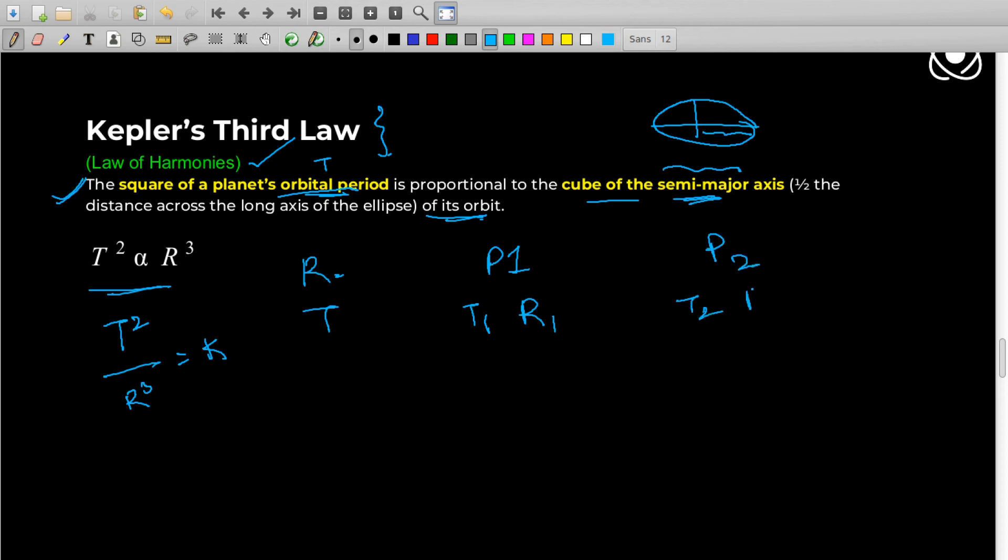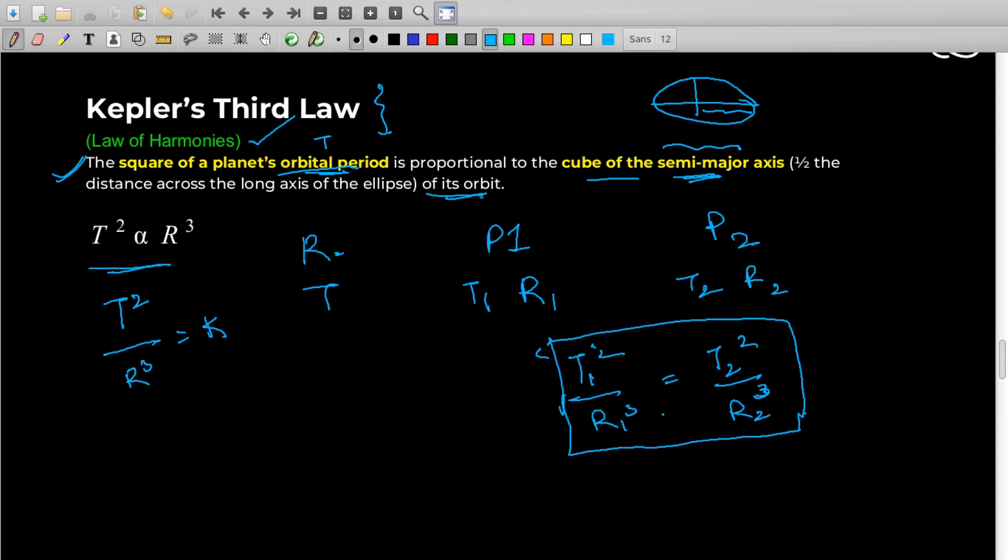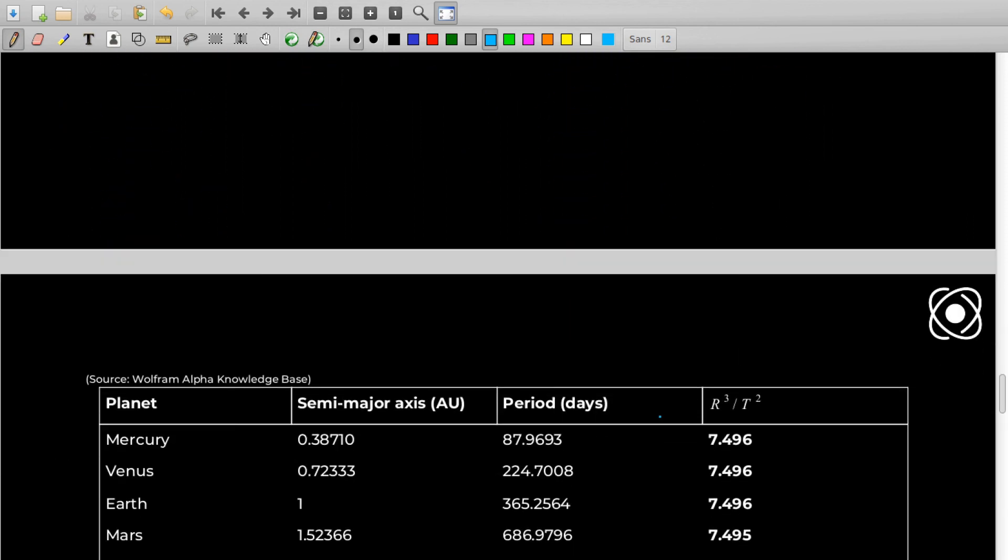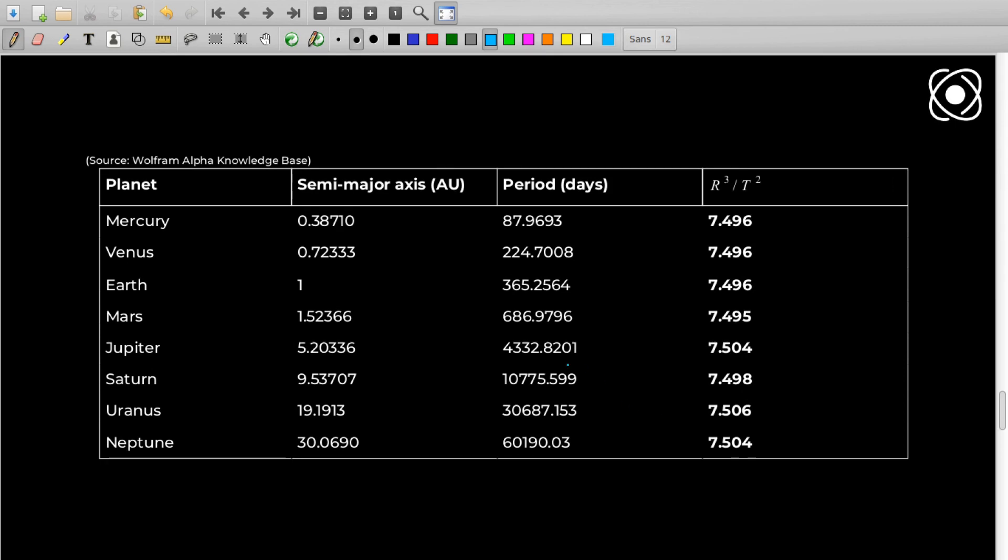and for planet 2 if it is t2 and r2, then you can relate them as t1 squared by r1 cubed is equal to t2 squared by r2 cubed. That is really interesting. Let me show you some data actually.